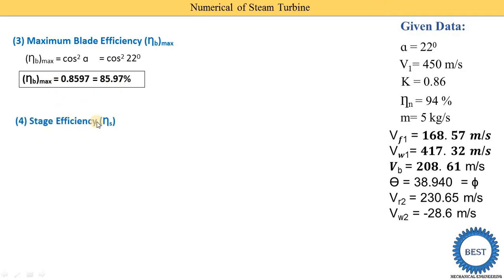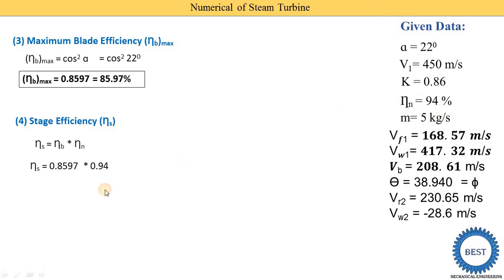The fourth parameter is stage efficiency. One stage is equal to the combination of nozzle and blade. We know the blade efficiency and the nozzle efficiency is already given as 94%. Multiplying both efficiencies: stage efficiency equals blade efficiency 0.8597 multiplied by nozzle efficiency 0.94, giving stage efficiency equal to 0.8081, that is 80.81 percent.